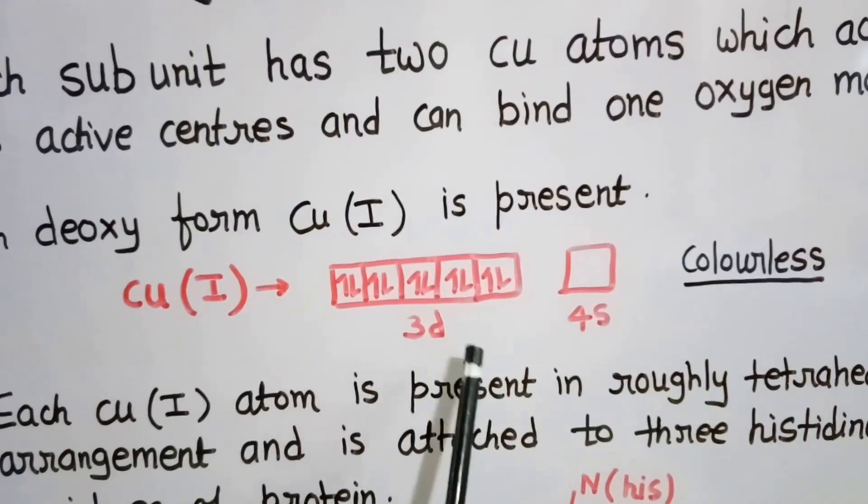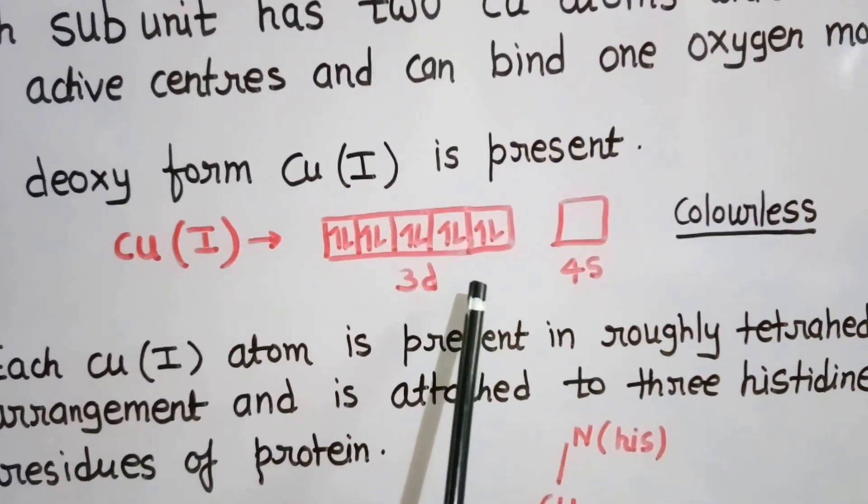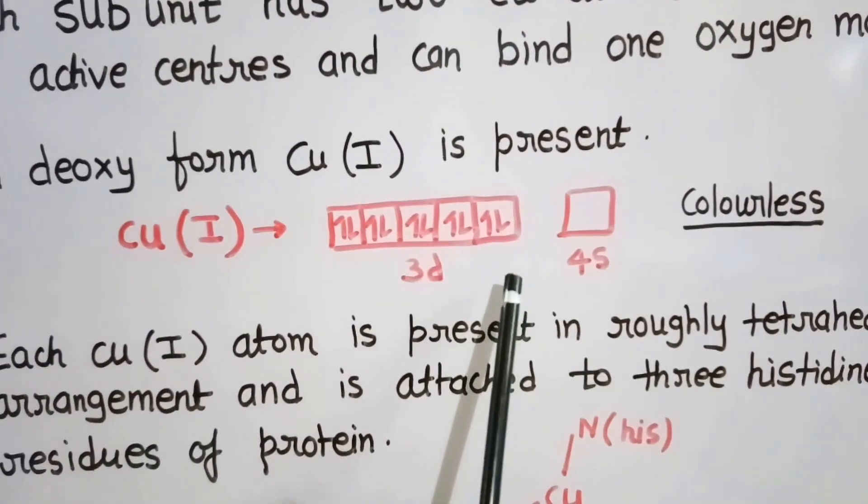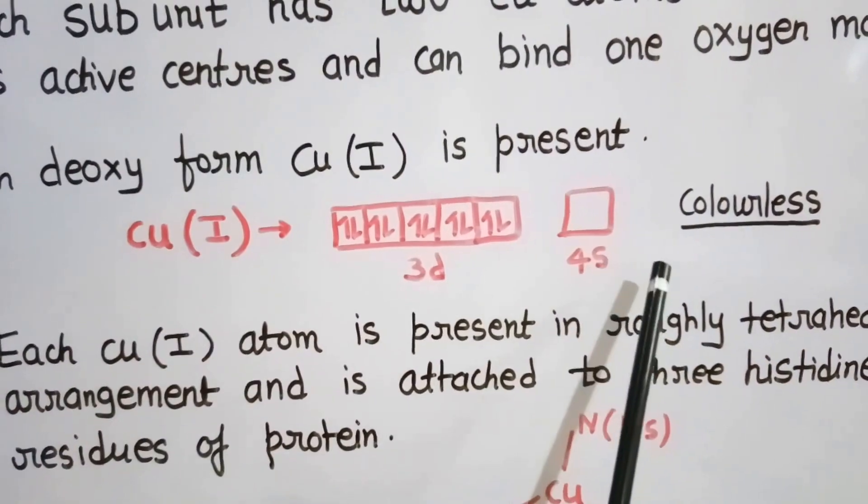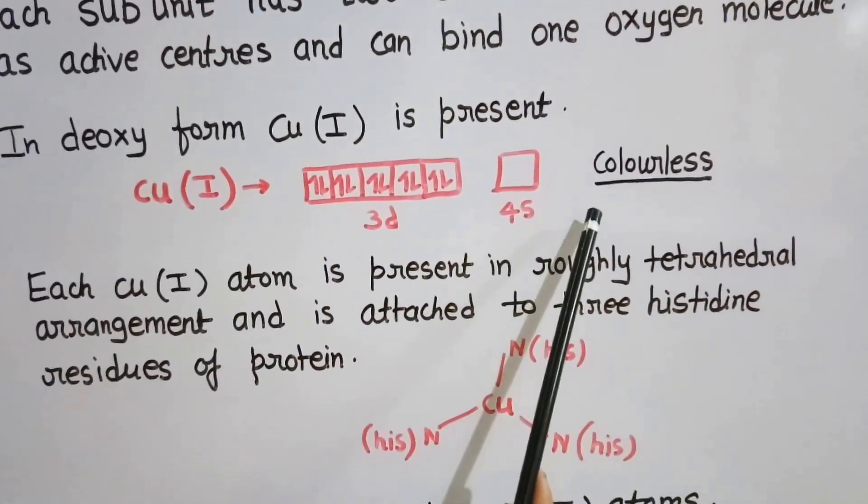In this state, all electrons are paired with no unpaired electrons. Hence, copper in +1 oxidation state is colorless, and therefore deoxy hemocyanin is also a colorless compound.